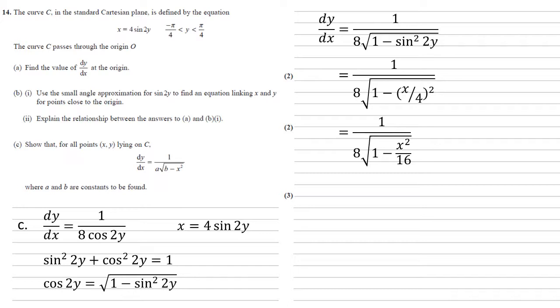So squaring there, we get x squared over 16. Now if we multiply through the square root by 16, we would then need to divide the whole thing by the root of 16, a quarter, to keep it the same. So we get 1 over 8 times a quarter, square root 16 minus x squared. So 1 over 2 lots of the square root 16 minus x squared, which is in the form that we needed.